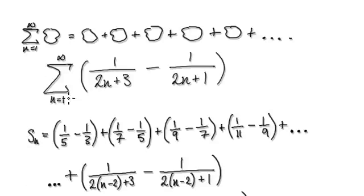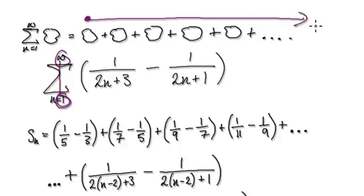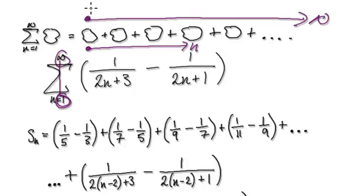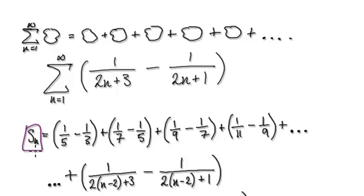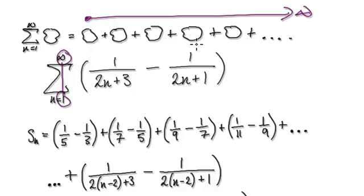To do this, our ultimate aim is to sum up from the first term all the way to infinity. But rather than doing that directly, we would sum it up from the first term to some arbitrary nth term. If you were summing to infinity, we use the notation S. If you're summing to the nth term, we use the notation Sn. So we first find Sn, then later take the limit as n tends to infinity.